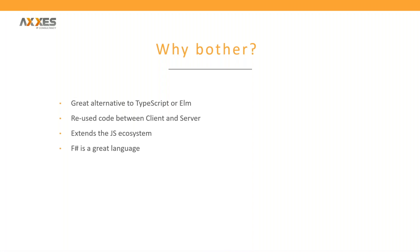Fable is a great alternative to both TypeScript and Elm. It has F#'s excellent type system, which compared to TypeScript has a few more tricks up its sleeve. Elm is a purely functional, strict programming language that allows the Elm architecture, but Fable goes broader — it can be used everywhere you can use JavaScript: not only the browser, but also back-end Node.js services, Electron, or React Native. It really extends the existing JavaScript ecosystem.